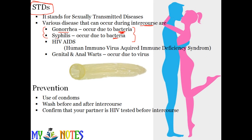The next STD is HIV AIDS — Human Immunodeficiency Virus / Acquired Immune Deficiency Syndrome. It is a type of virus. Many people already know about it. If you have physical contact with any HIV-infected person, this disease transfers. Having multiple partners increases the risk of spreading this disease. There is no cure for HIV, so prevention is better than cure.